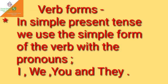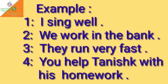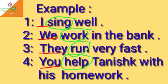You must know where to use the base form or simple form of a verb and the s or es form of a verb in simple present tense. We use the simple form of the verb with the pronouns I, we, you, and they. Example 1: I sing well. Example 2: We work in the bank. Example 3: They run very fast. Example 4: You help Tanishk with his homework. In all these examples, the subjects I, we, they, and you are all plural subjects. That's why we use the base form of the verb — sing, work, run, and help.